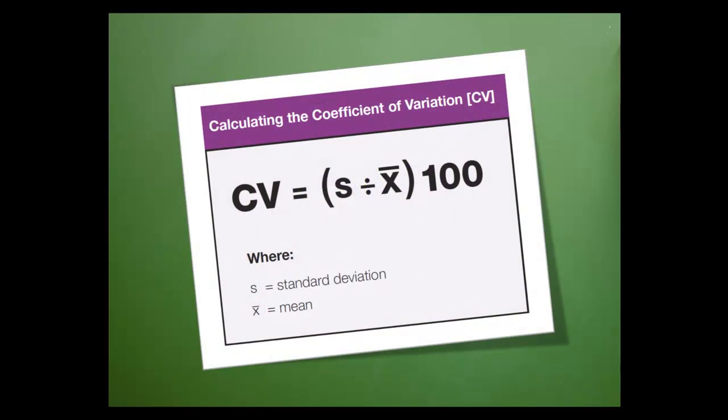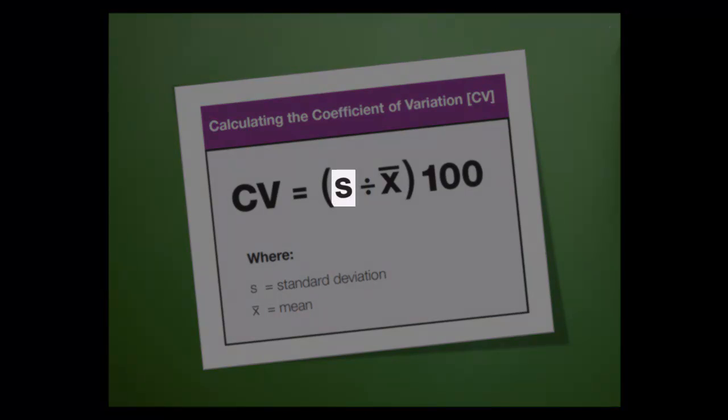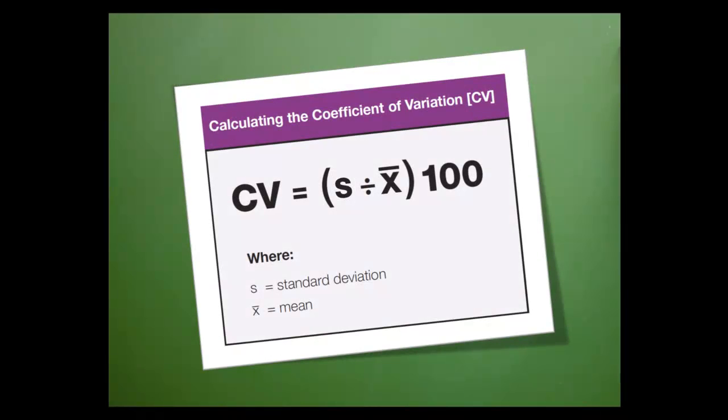This is the formula for the coefficient of variation. Let's pick it apart so that you can understand it. S represents the standard deviation. Bar X is the mean.